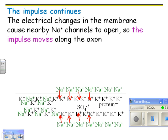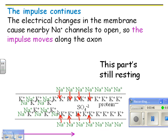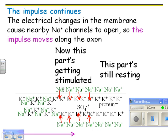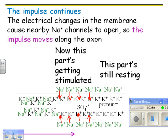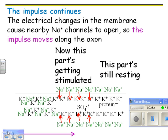So then the impulse continues. The electrical changes in the membrane right here cause nearby sodium channels to open. So the impulse moves along. The electrical disturbance here that was caused by the charges moving in causes the pores to open over here. So now sodium moves in there. This part is still resting. This part is now the stimulated part. Something else happens here, but it takes a while to go into that, so I think I'm going to skip that with you.